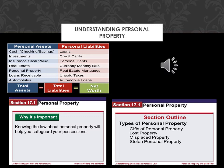Because personal property is viewed as an asset, it may be taken into consideration by a lender when someone applies for a mortgage or other loan. Just as some loans — mortgages, for example — are secured by real property such as a house, some loans are secured by personal property.